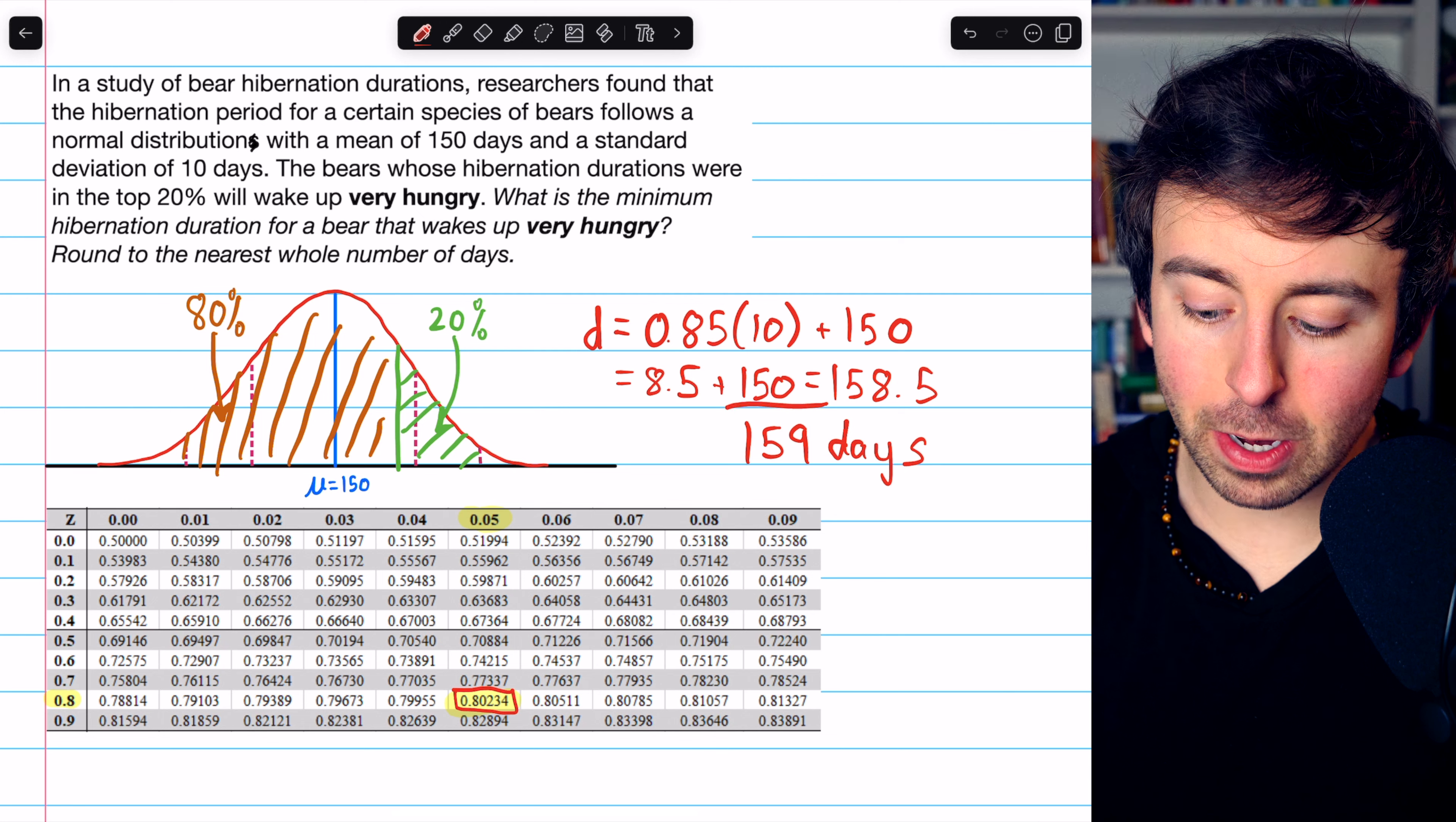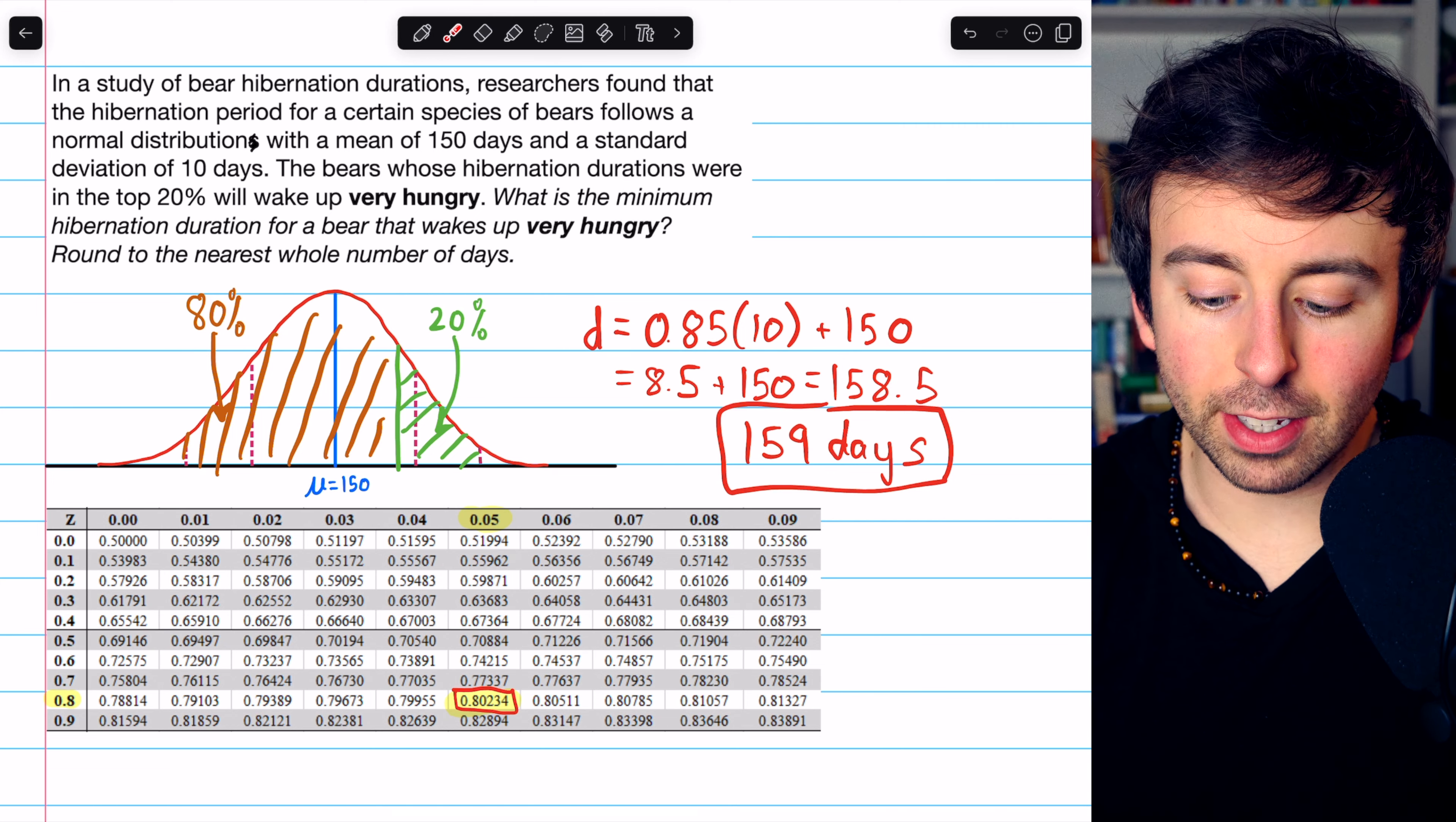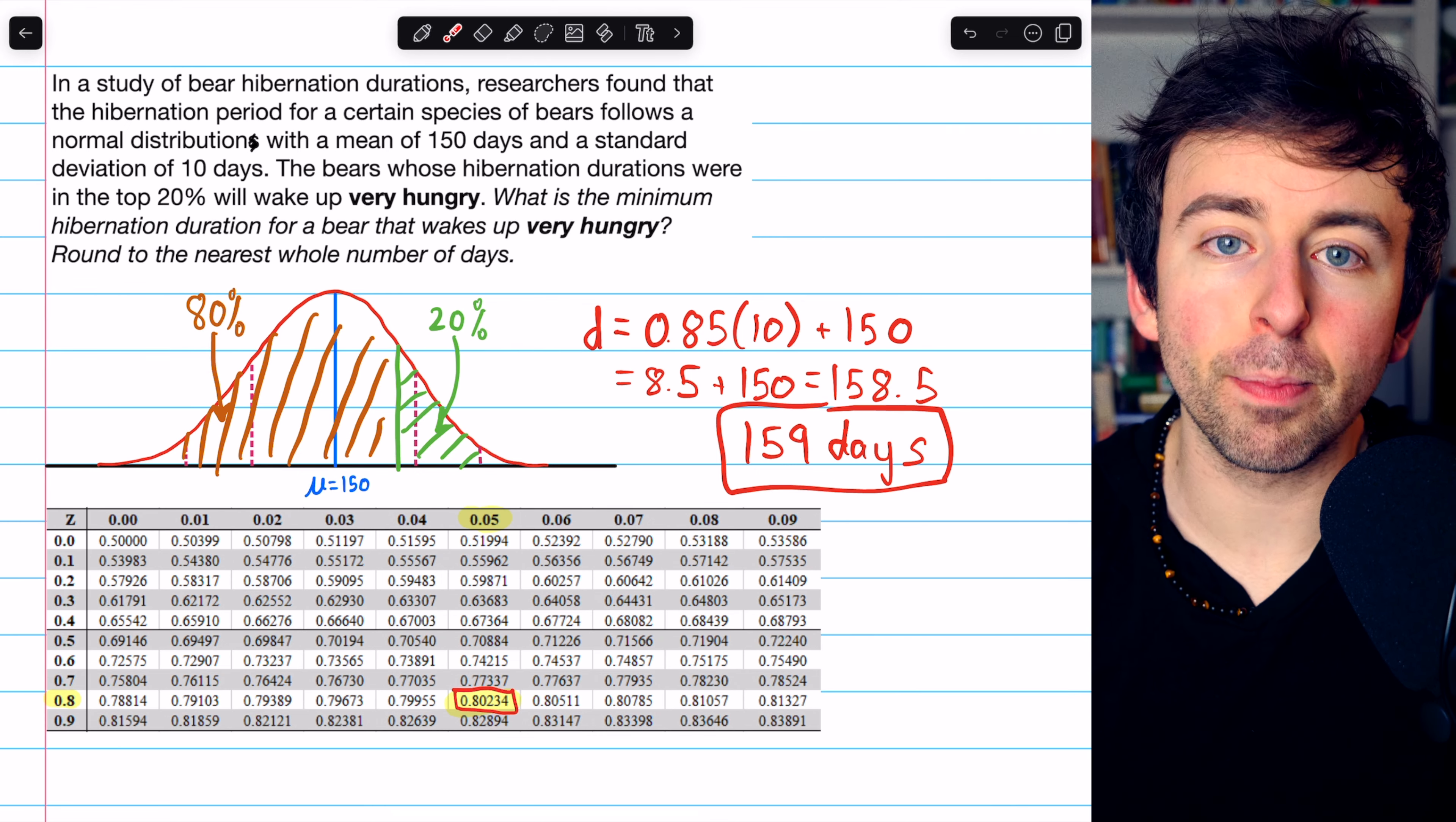Any bear whose hibernation period is at least 159 days is going to wake up very hungry. One last thing, remember that looking for the minimum of something in the top 20% is the same as looking for the 80th percentile.